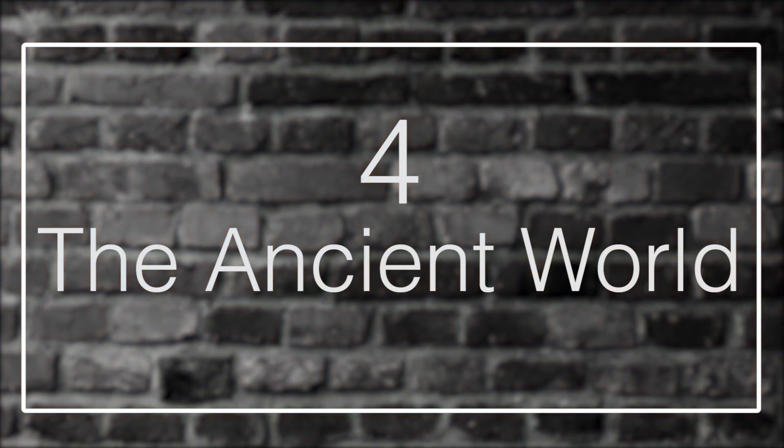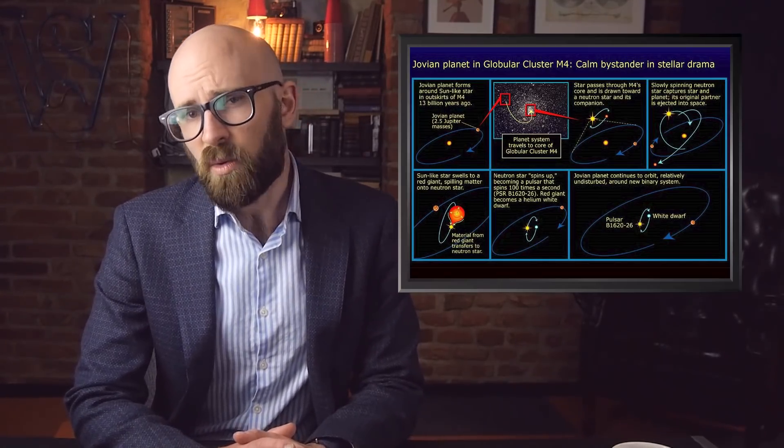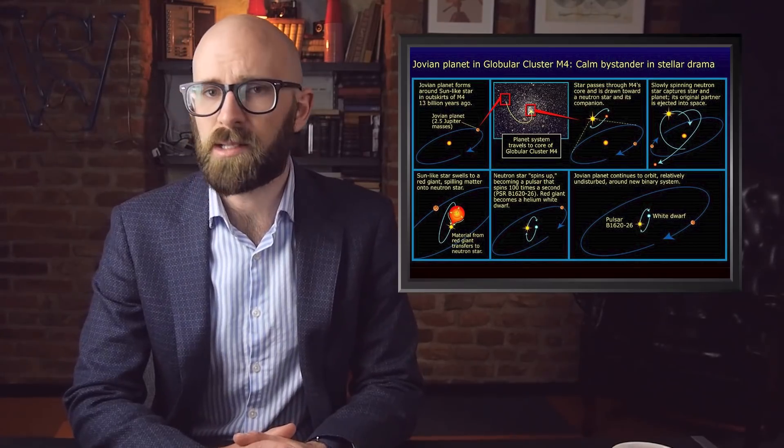4. The Ancient World. While finding a very young planet is a difficult task, at the other end of the spectrum it is also unusual to find an extremely old world. Located 12,400 light years from Earth in the middle of the Scorpius constellation, is a planet 2.5 times the mass of Jupiter, known as PSR B1620-26B, and sometimes either Methuselah or the Genesis planet. It's the oldest known world in the entire universe so far.